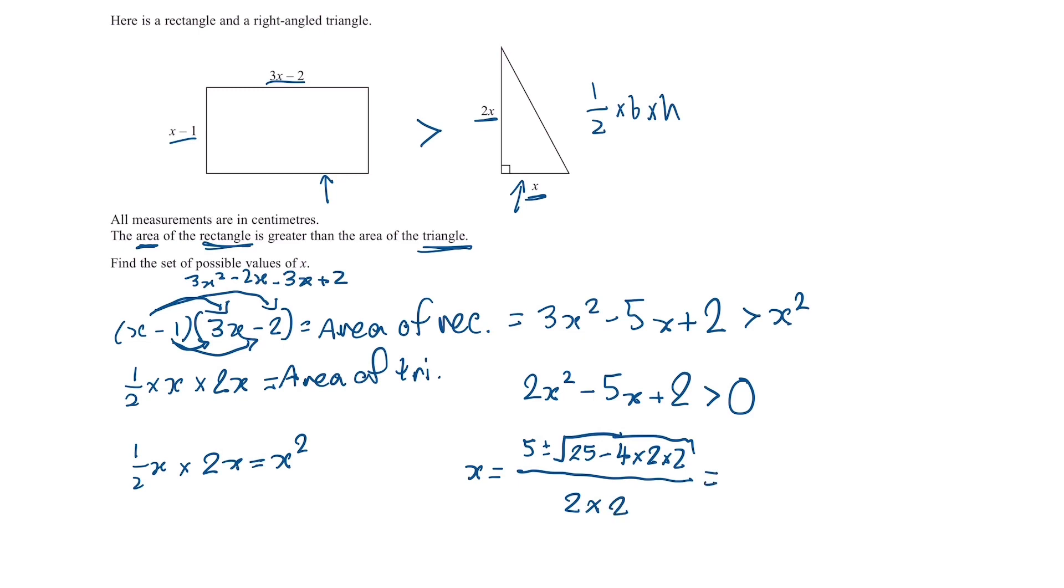And if we simplify this we're just going to get this. Now we can simplify this further as square root of 9 is 3 so we have 5 plus or minus 3 over 4. So our two solutions are just going to be x is equal to 2 and x is equal to a half.